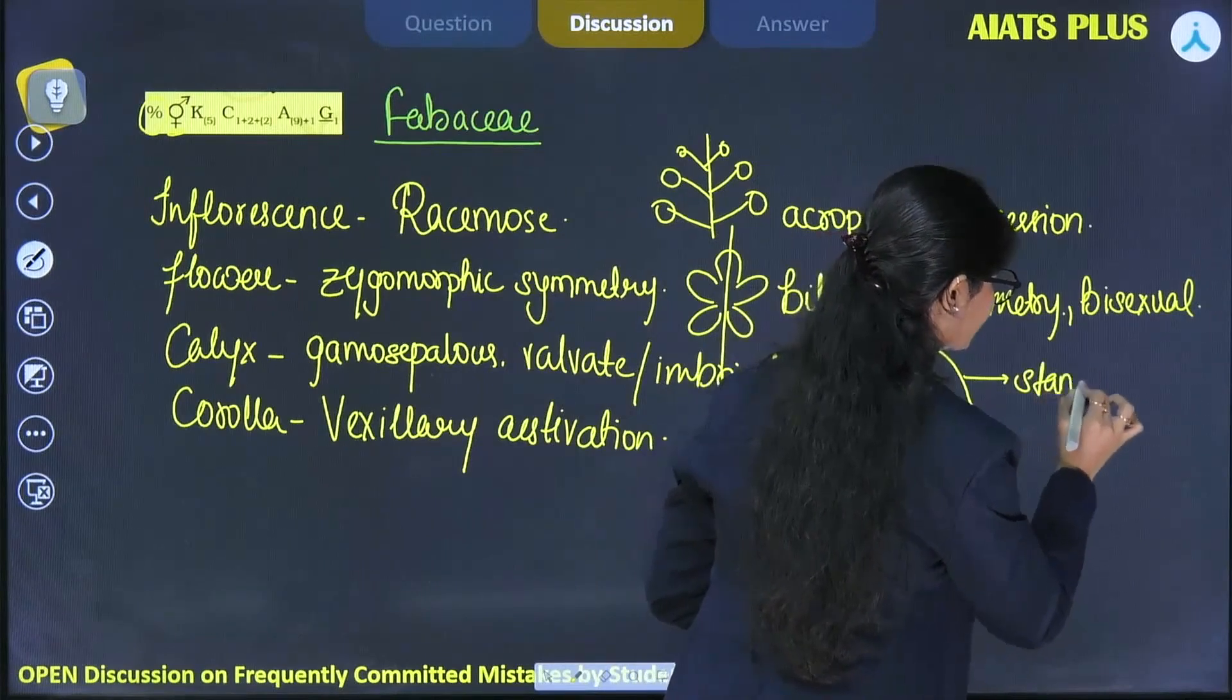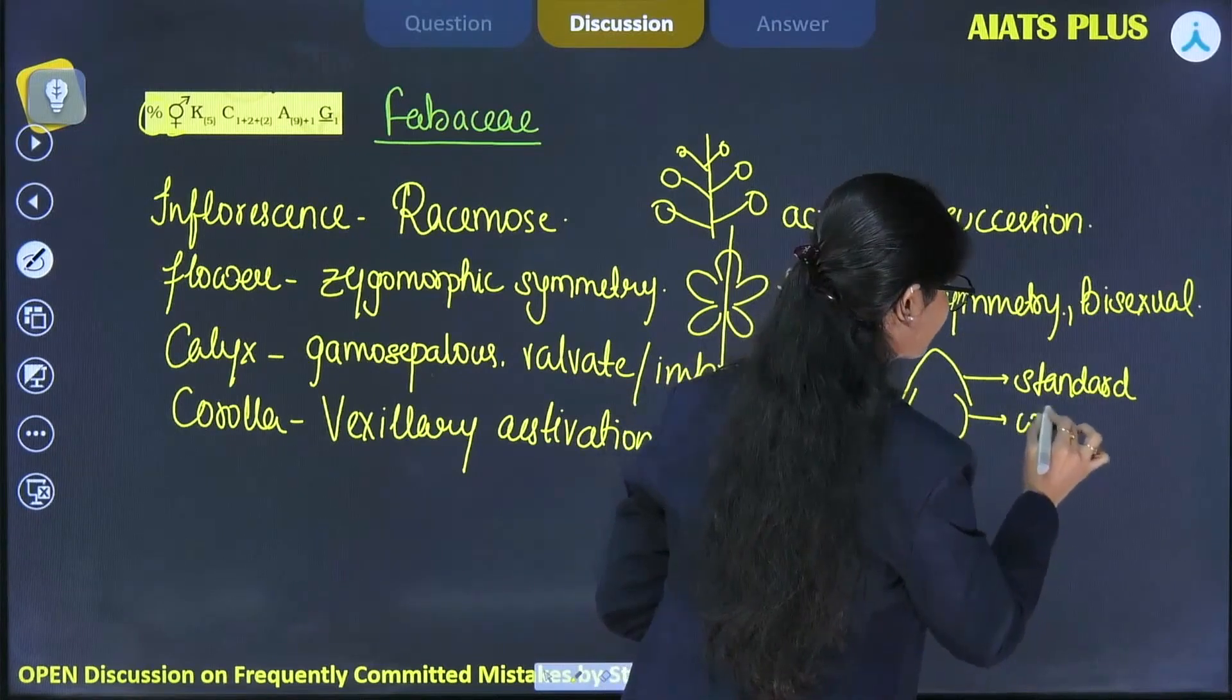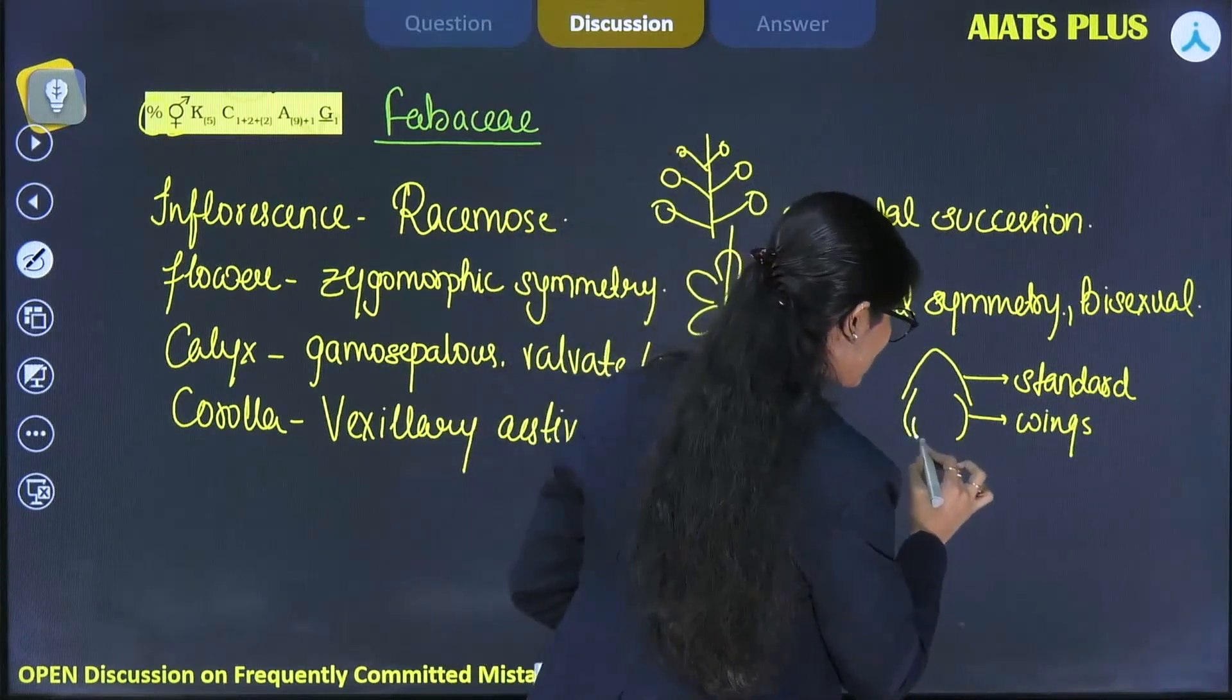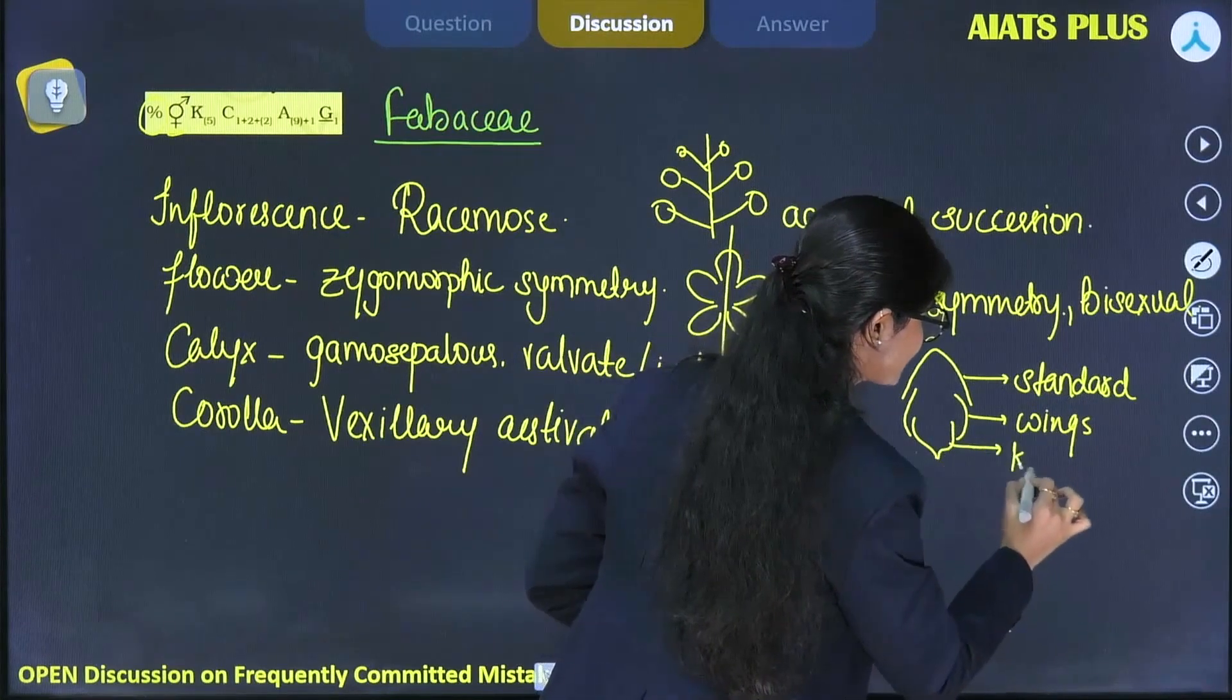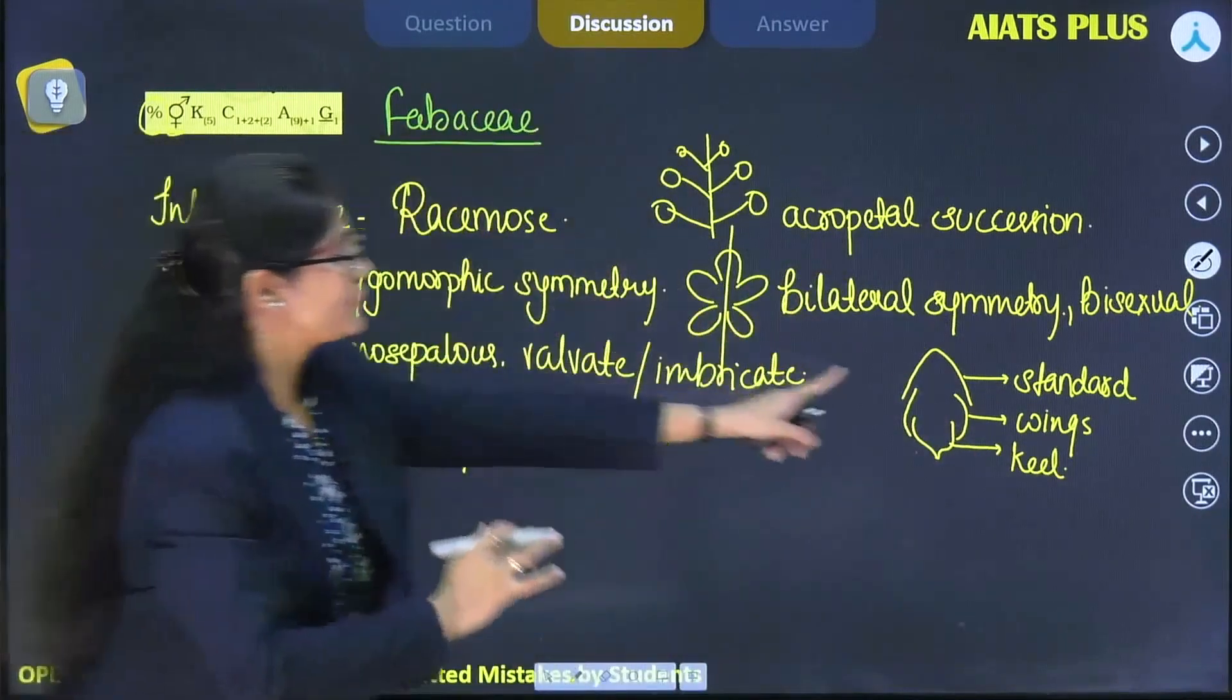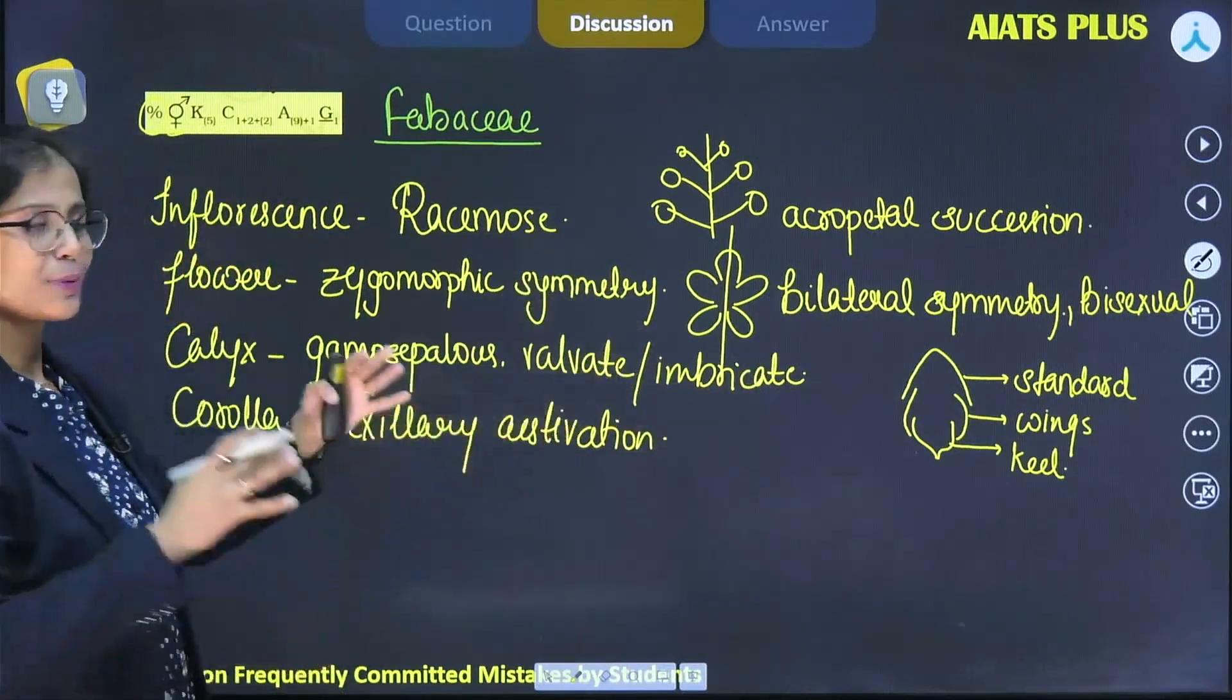It encloses two anteriorly placed wings - these two petals are known as wings or alae. And two petals known as keel are fused together. So they are arranged: one standard, two wings, and two fused for keel. This is vexillary aestivation, a special type found in members of Fabaceae.